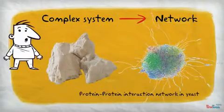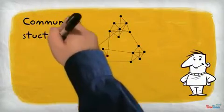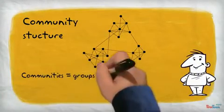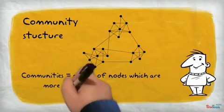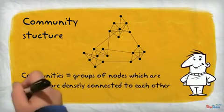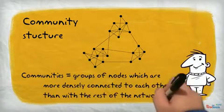A common challenge in studying complex networks is the identification of community structure. In general, communities are defined as groups of nodes which are more densely connected to each other than with the rest of the network.